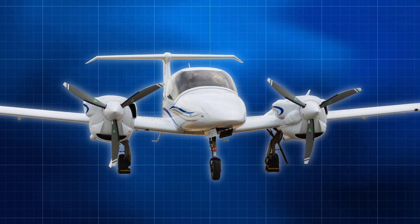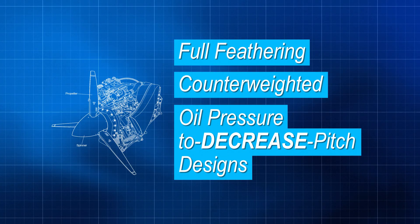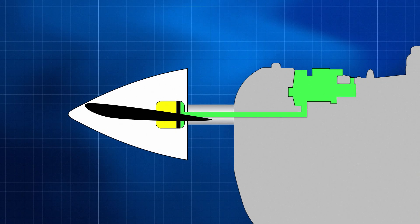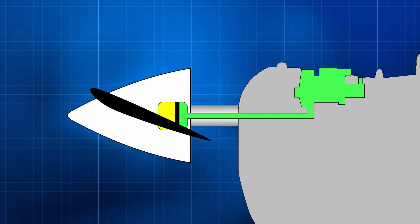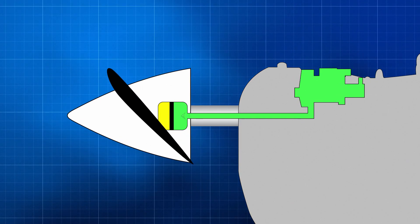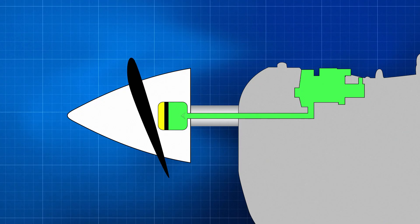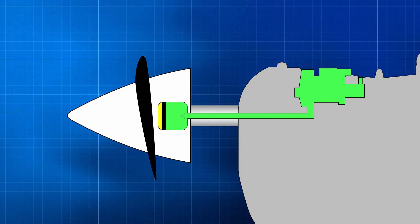In contrast to most single engine propeller designs, the constant speed propellers installed on the DA42 are full feathering, counterweighted, oil pressure to decrease pitch designs. In this design, increased oil pressure from the propeller governor drives the blade angle toward low-pitch, high RPM, away from feathering.